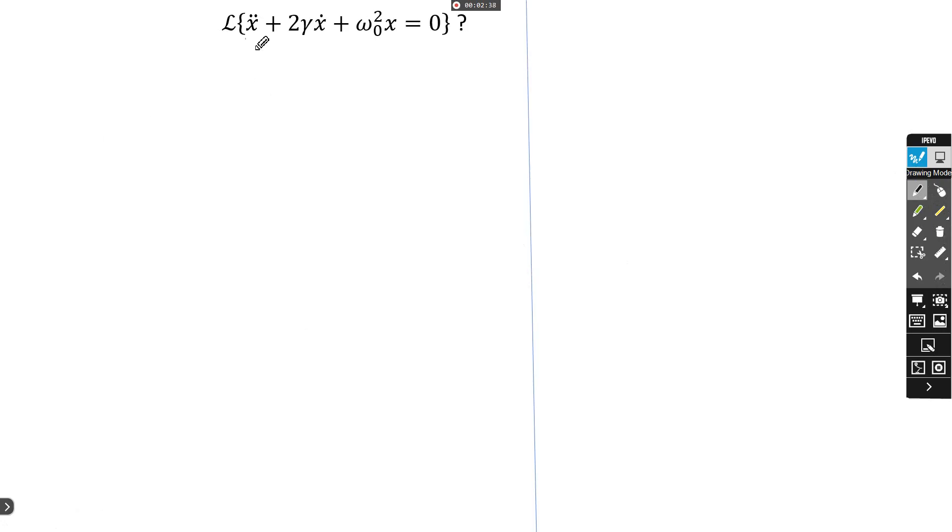Now, let's try to solve this equation. Since we have a linear equation we can apply Laplace transform linearly. We get Laplace of x double dot, plus 2γ Laplace of x dot, plus ω₀² Laplace x equal zero.